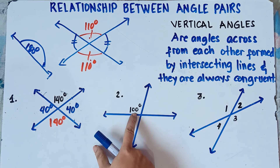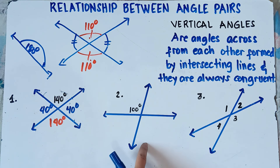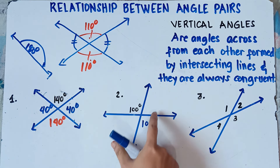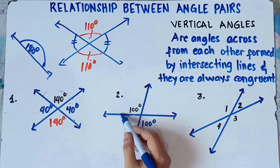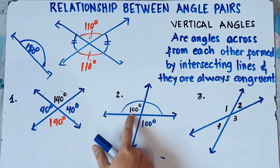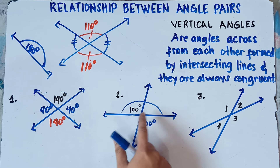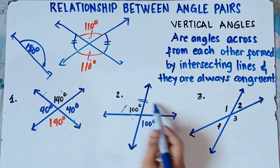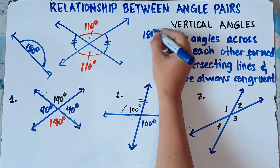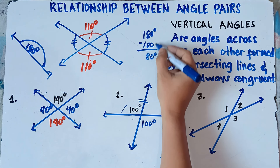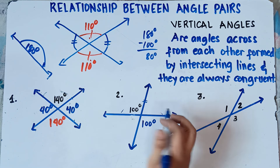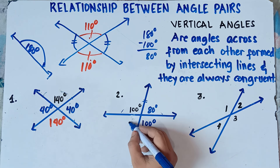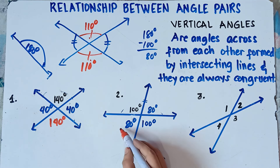For number two, if this is 100 degrees, the opposite angle is also 100 degrees. Now what will be the measure of the other angle? If you have a straight line, you have a straight angle of 180 degrees. So simply subtract 180 minus 100, which equals 80 degrees. Or you can think of it as: 80 plus 100 equals 180. Therefore this angle is 80 degrees, and the angle opposite to it is also 80 degrees. That's it for number two.